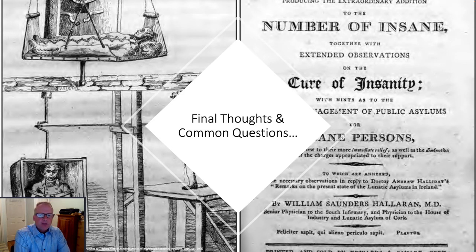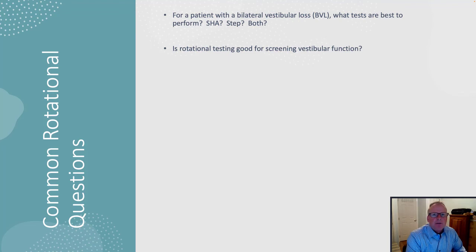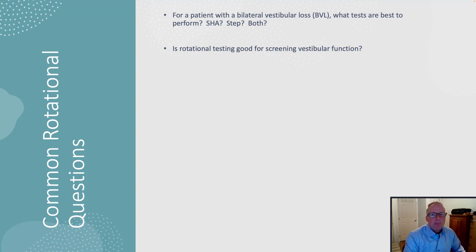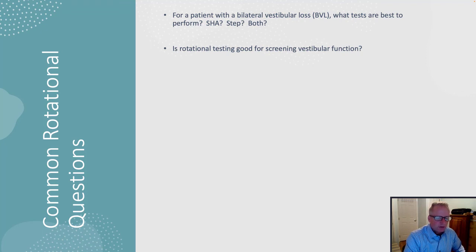Some final thoughts and common questions: for a patient with a bilateral loss, what test is best to perform — SHA, step, or both? To be honest, I like both. But SHA is probably better because it will give you more information regarding vestibular reactivity at a very broad frequency range.